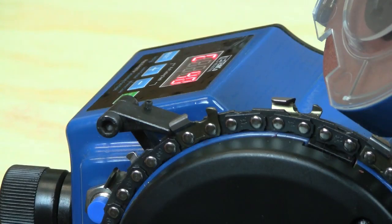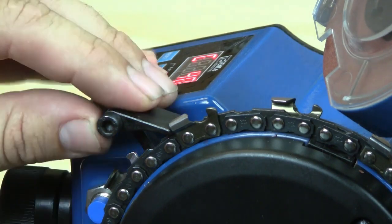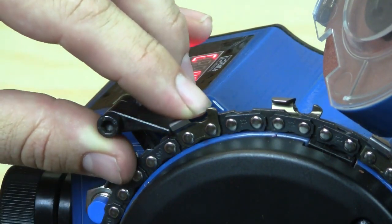Once you've fully sharpened all of the cutters on your chain, the next step is to check and see if we need to grind the depth gauges or rakers.